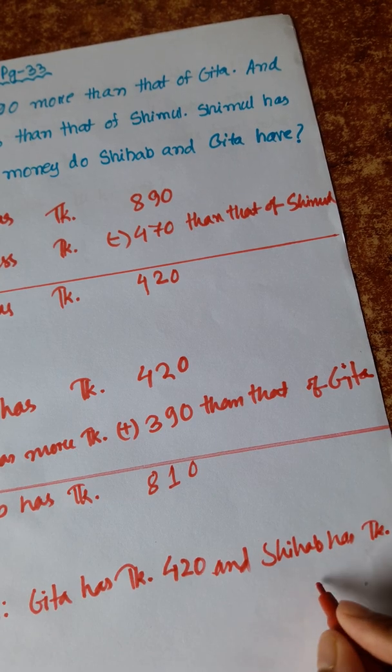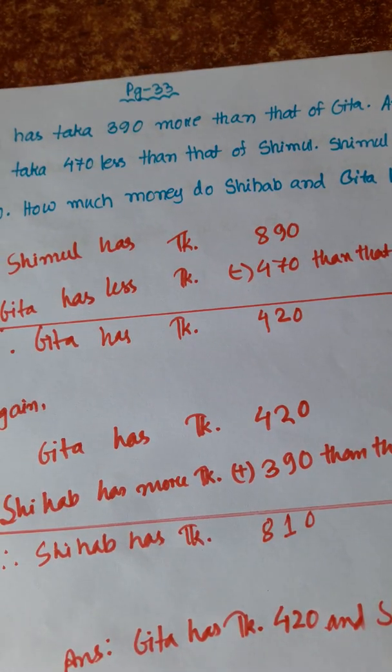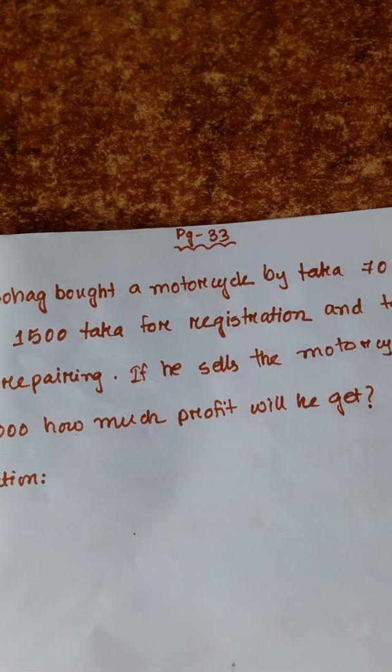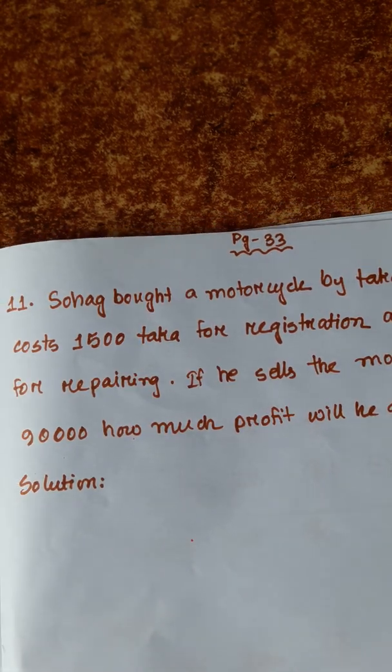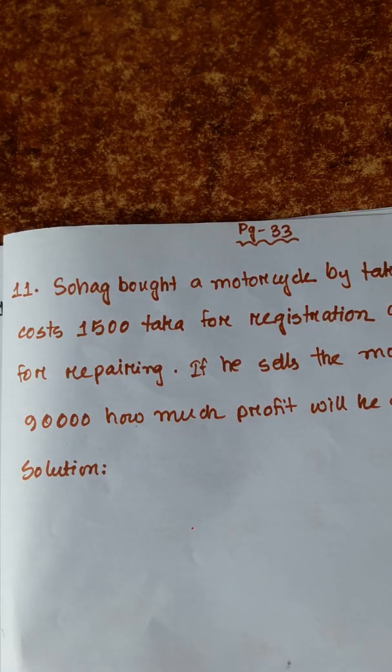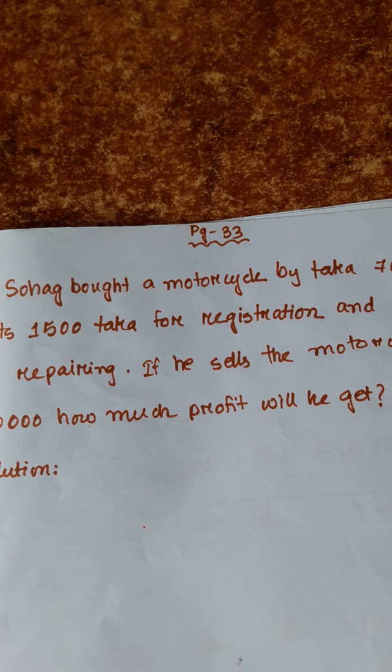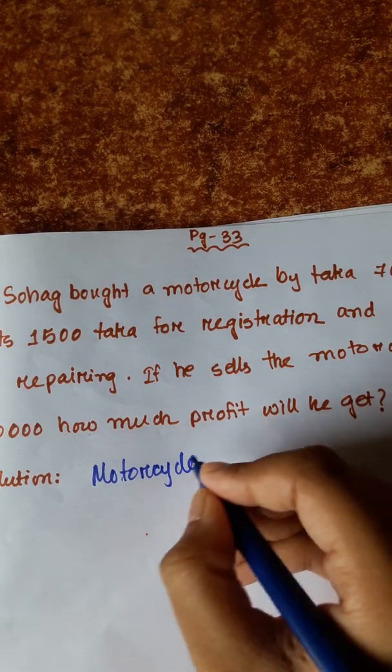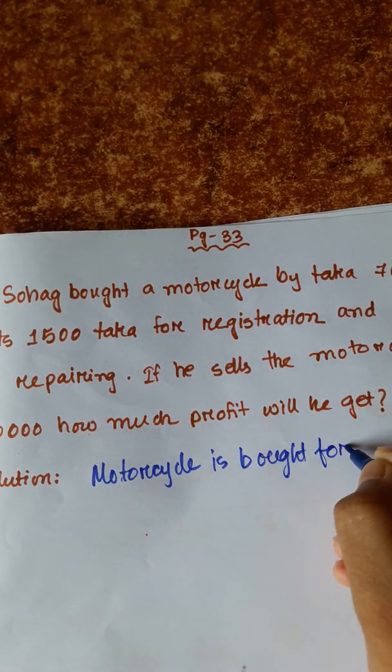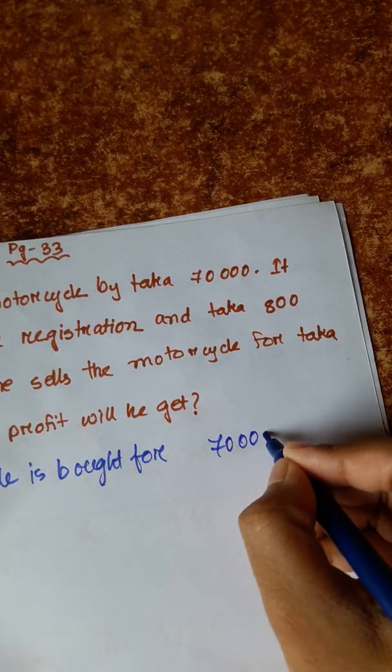Now problem 11. Shohak bought a motorcycle by taka 70,000. It costs 1,500 taka for registration and taka 800 for repairing. If he sells the motorcycle for taka 90,000, how much profit will he get? The motorcycle is bought for 70,000 taka.